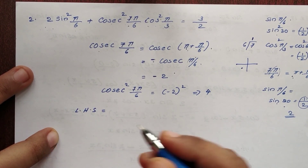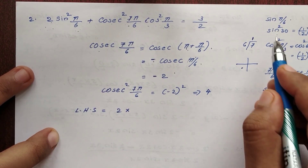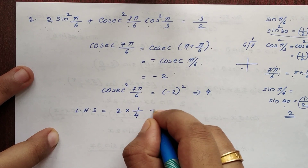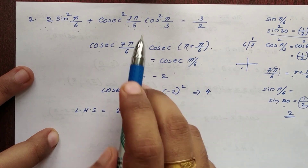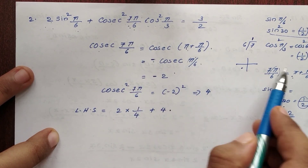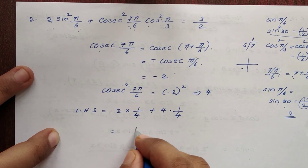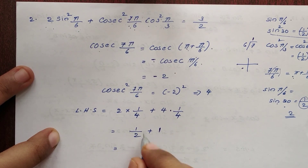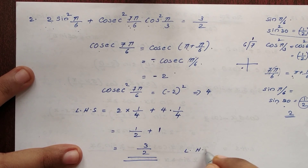So LHS is equal to: 2 into sin²(π/6) is 1 by 4, plus cosec²(π/6), plus cos²(π/3) that is 1 by 4. So this is equal to 1 by 2 plus 4, then LHS is equal to RHS.